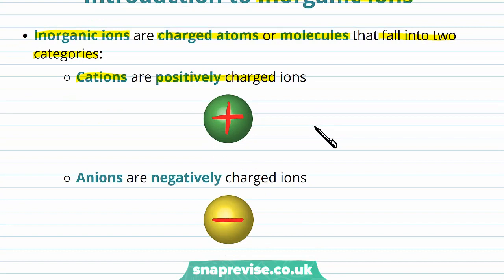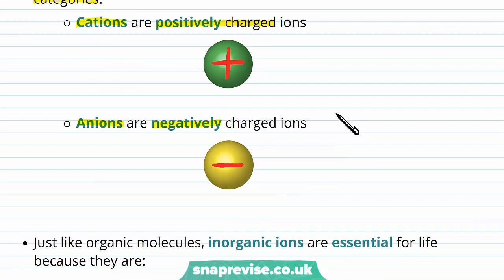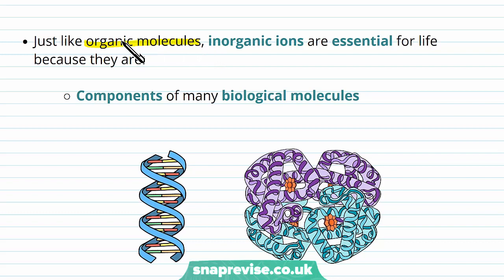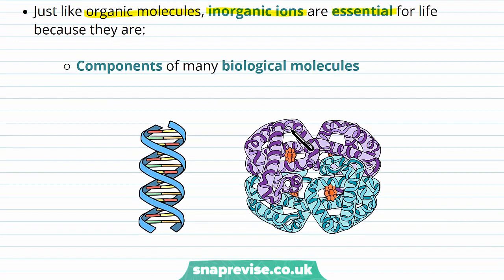Just like organic molecules, where organic molecules tend to be based around carbon, the inorganic ions are essential for life as well, for various reasons. Firstly, they can be components in various biological molecules. For example, in the molecule of DNA, essential to its structure are phosphate ions. Another example is in the transport molecule of hemoglobin, we find various ions of iron, Fe2+.